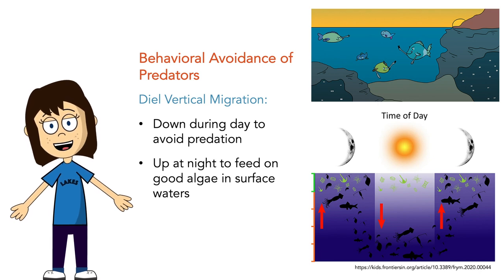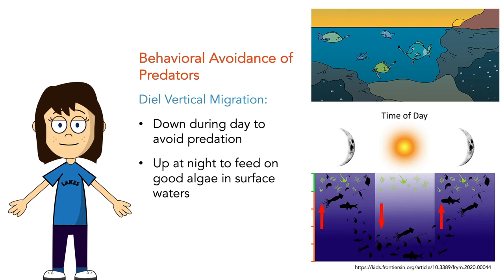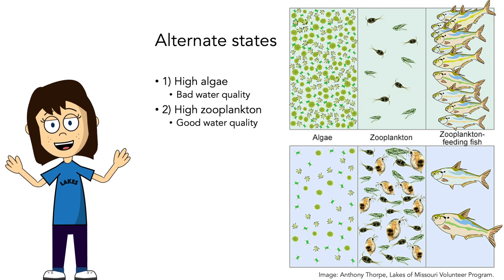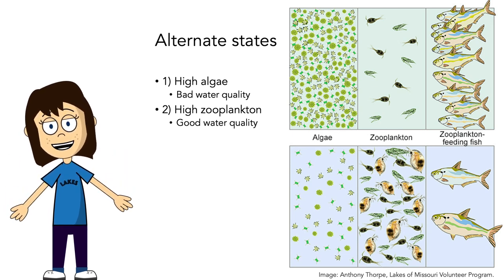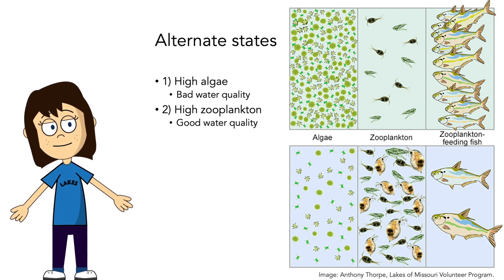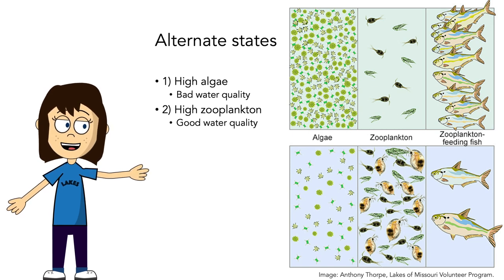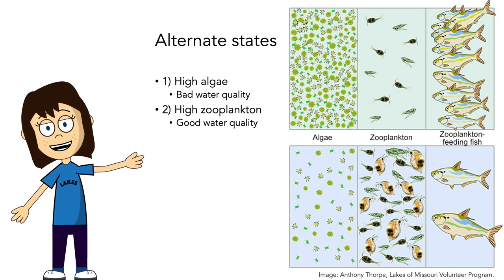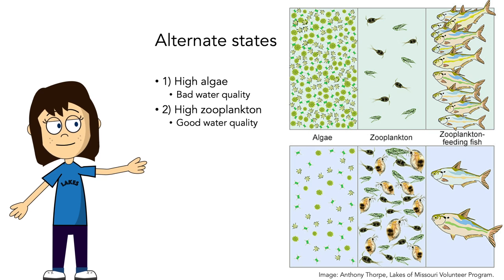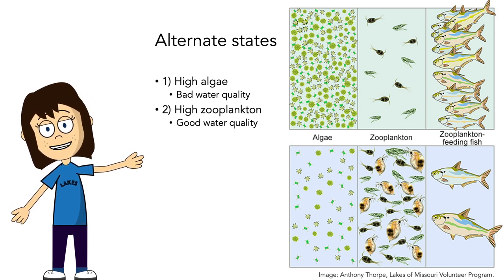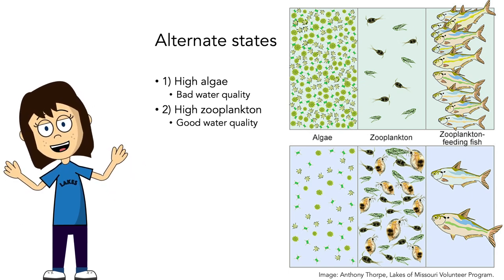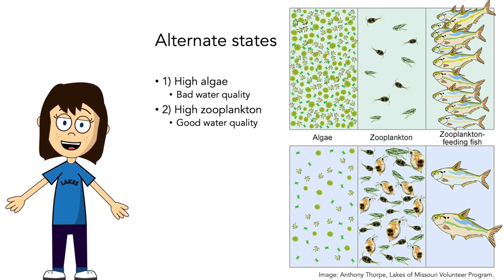Let's take what we've learned about phytoplankton population dynamics, zooplankton populations, and predation, and put them together in terms of community ecology and overall water quality. Consider two alternative states of an idealized lake: one state has really high algae and poor water quality — there aren't very many zooplankton to feed on them because there are a lot of zooplankton-feeding fish. The other state has good water quality because there aren't very many algae — the zooplankton are keeping algae numbers in check — and there are a lot of zooplankton because there aren't very many planktivorous fish.